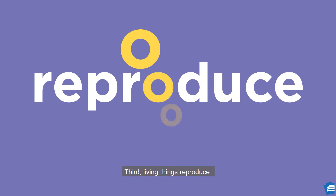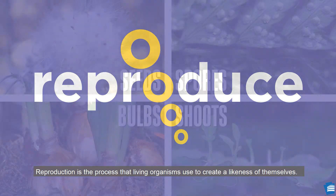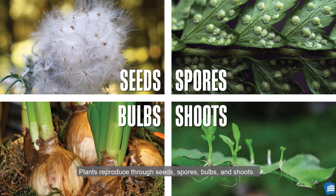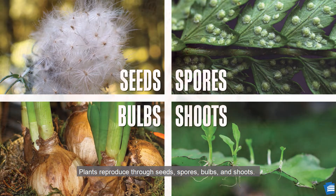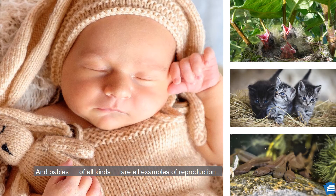Third, living things reproduce. Reproduction is the process that living organisms use to create a likeness of themselves. Plants reproduce through seeds, spores, bulbs, and shoots. And babies of all kinds are all examples of reproduction.